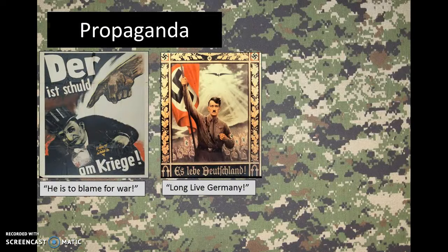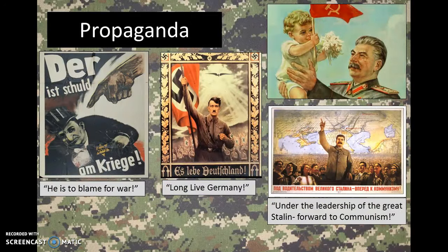We talked a little bit about the use of propaganda, and here are some examples used by Hitler and Stalin. The two Hitler examples on the left show a Jewish person being blamed for the war — very cartoony, meant to look very scary and almost lifeless. The other Hitler piece and the two Stalin examples are all meant to show their leaders in a very positive light: offering hope, offering prosperity, leading the nation, leading the children. These are just some examples of the propaganda used during World War II.